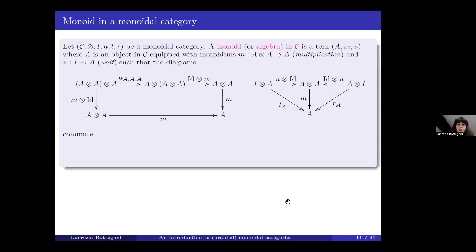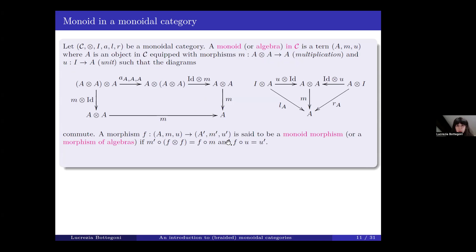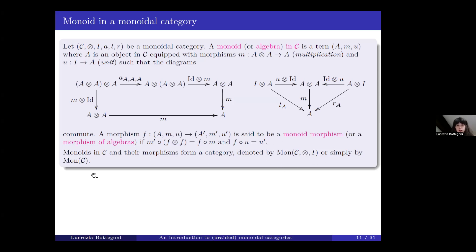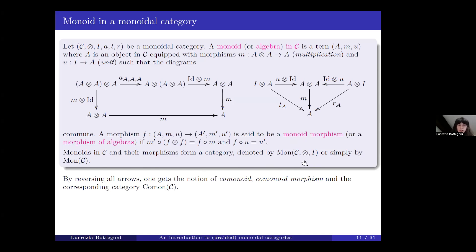The notion of a monoid can be defined in an arbitrary monoidal category. Given a monoidal category C, a monoid or algebra in C is a triple (A, M, U) where A is an object in C endowed with two morphisms — multiplication M and unit U — such that the associativity law and left and right unit law diagrams commute. A morphism between two monoids in C is a monoid morphism if F is compatible with the multiplications and with the units. Monoids in C and their morphisms form a category denoted Mon(C). By reversing arrows, one gets the definition of comonoid and comonoid morphism.